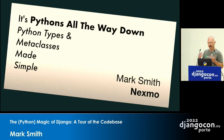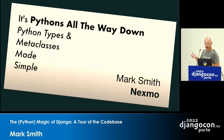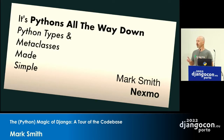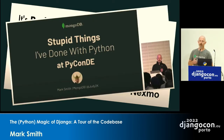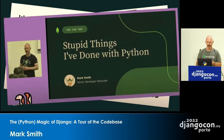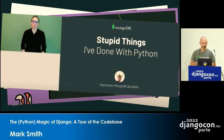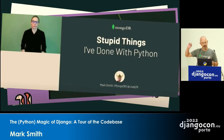You may have seen a talk I previously gave called Python Types and Metaclasses Made Simple — which, as I say, is inaccurate. A more accurately titled talk I've given about these topics is called Stupid Things I've Done with Python, given at PyCon Germany, PyCon Italia, and during lockdown at PyGotham. That lady in the picture actually translated my talk into American Sign Language, which I think is kind of cool.